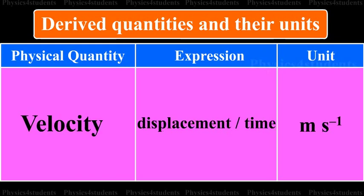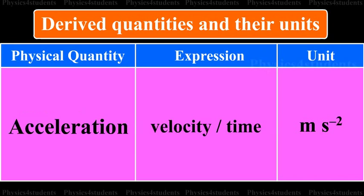Physical quantity is velocity. Its expression is displacement by time. Its unit is m s raised to minus 1. Physical quantity is acceleration. Its expression is velocity by time. Its unit is m s raised to minus 2.